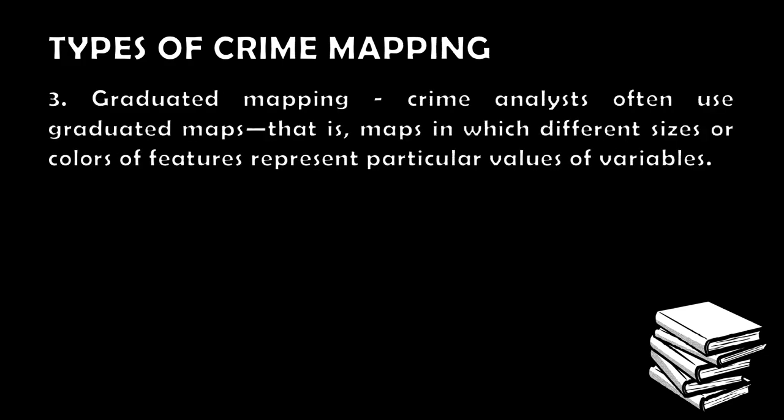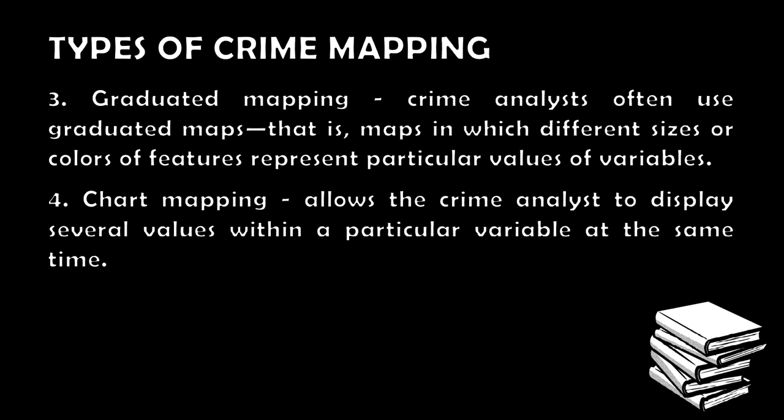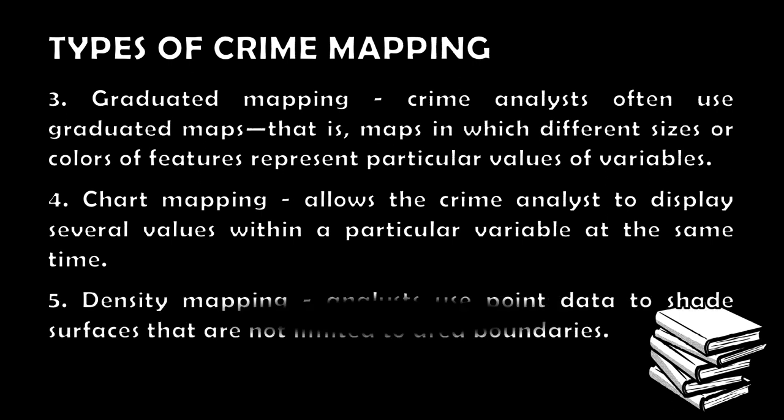Next is graduated mapping. Crime analysts often use graduated maps — maps in which different sizes or colors of features represent particular values of variables. Graduated mapping is more complicated and detailed compared to single symbol mapping. Next is chart mapping, which allows crime analysts to display several values within a particular variable at the same time. Then city mapping, where analysts use point data to shade surfaces that are not limited to area boundaries — instead of symbols, shading is used as the indicator.